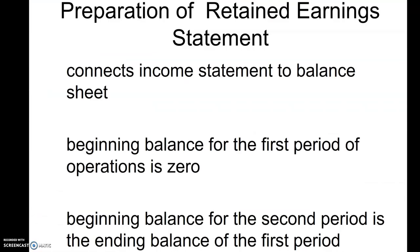In our example we had an ending retained earnings balance from the prior period. But if it's your first period of operations, your beginning balance is zero because we started with nothing. After the first period, you always take the prior period's ending retained earnings as this period's beginning retained earnings.